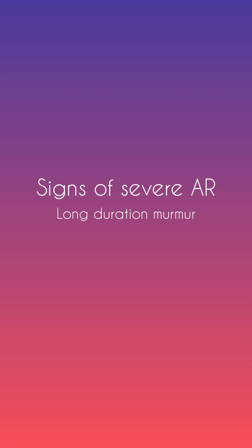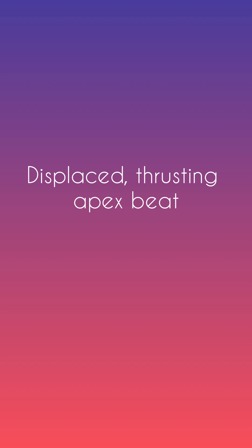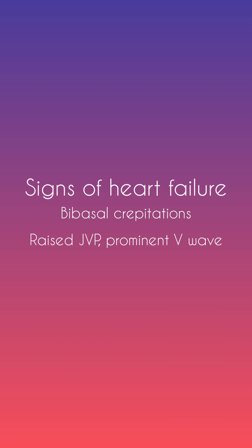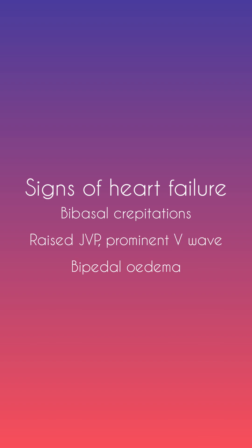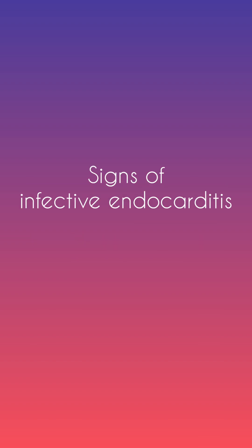It is severe as the murmur is of long duration, associated with a soft S2 and an S3. There is an Austin Flint murmur with an opening snap. The apex beat is displaced and thrusting.